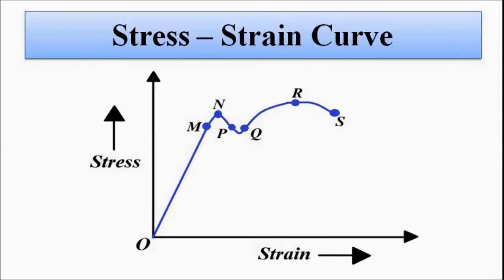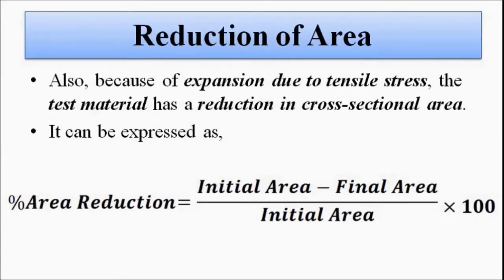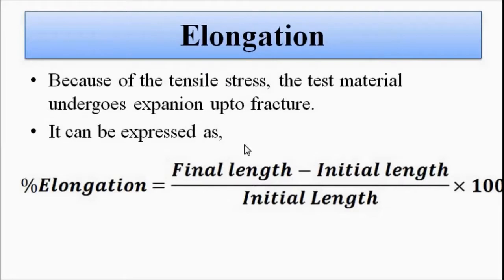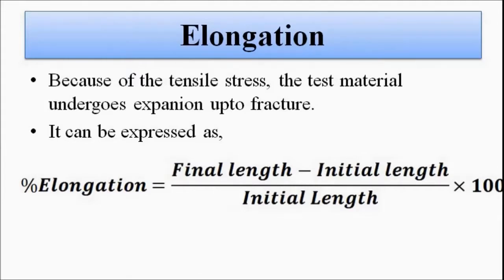When a material undergoes deformation it gets elongated because of the stress. There is a change in length, and the percentage of elongation is calculated as: final length after deformation minus initial length, divided by initial length, times 100. Another quantity is the reduction in area — as length increases, cross-sectional area decreases — calculated as initial area minus final area divided by initial area. This occurs because of tensile stress.